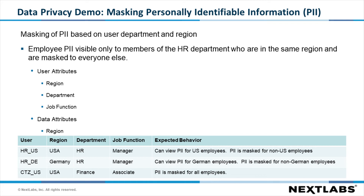For this example, we have three users. The first is an HR manager in the United States who will be able to view PII for US employees, but will have the PII for non-US employees masked. The second is an HR manager in Germany, who will be able to view PII for German employees, but will have the PII for employees outside of Germany masked. And finally, the third user is based in the United States, but is an associate in the finance department, and will have the PII masked for all employees.